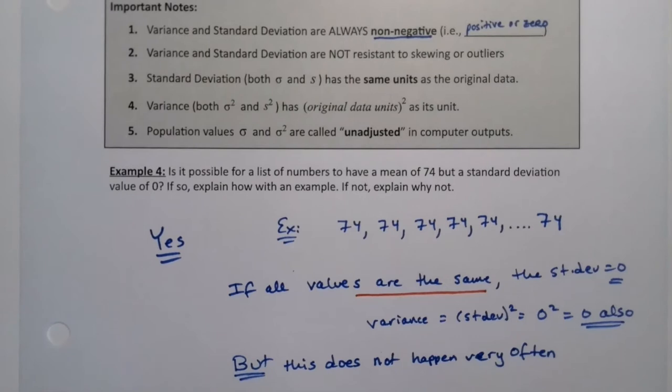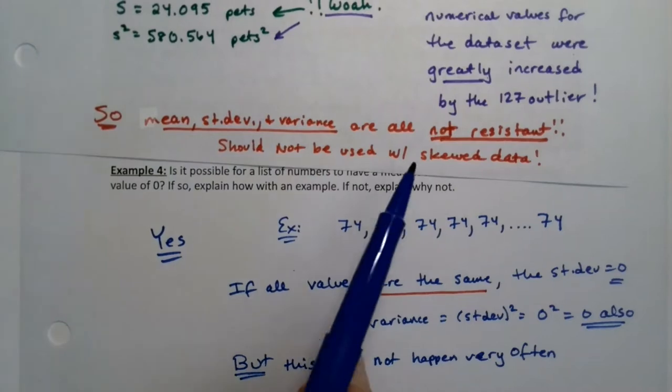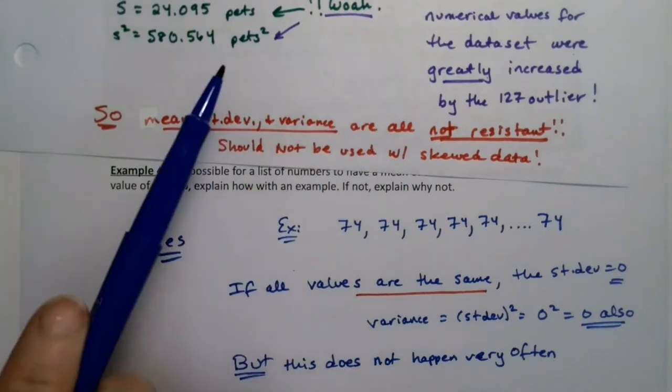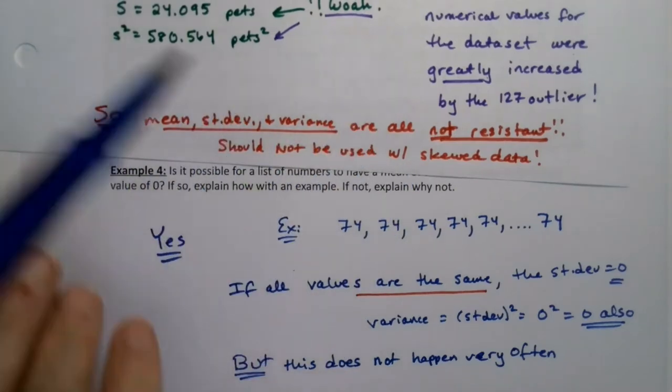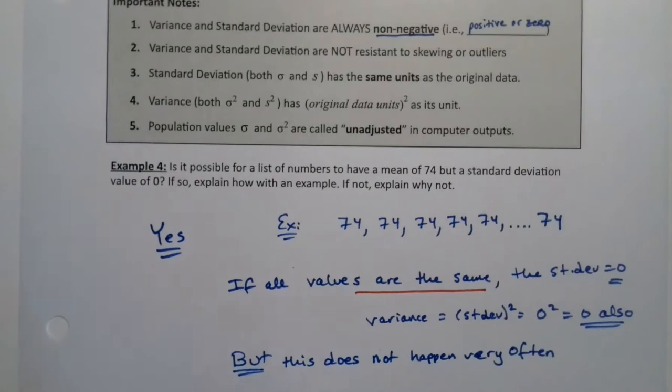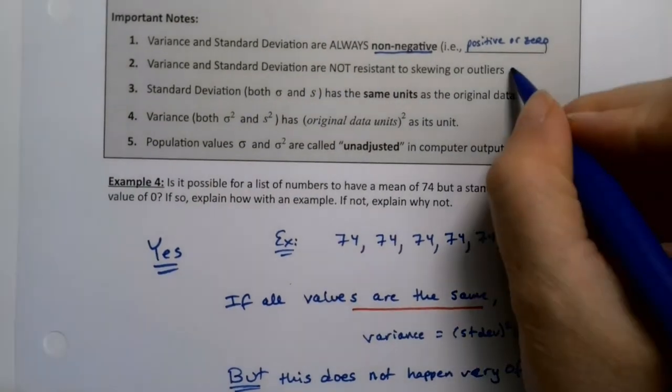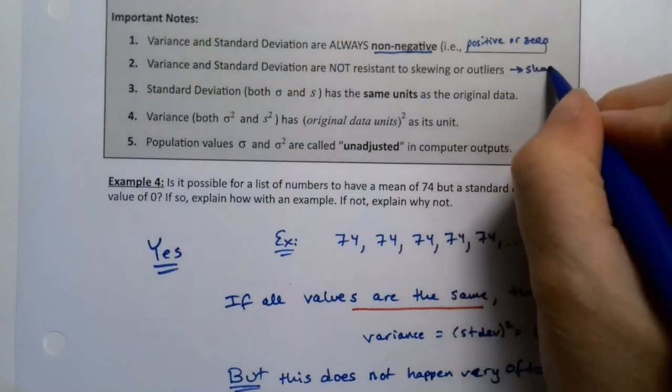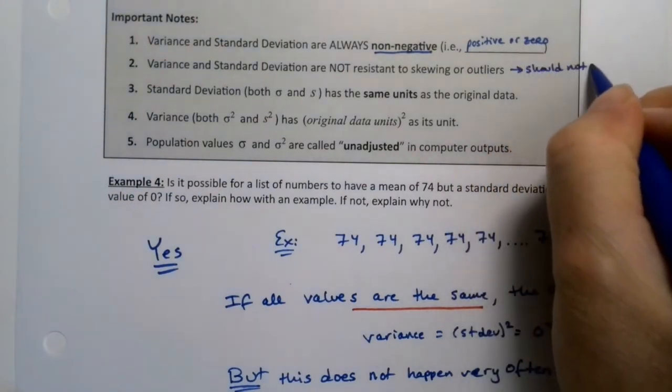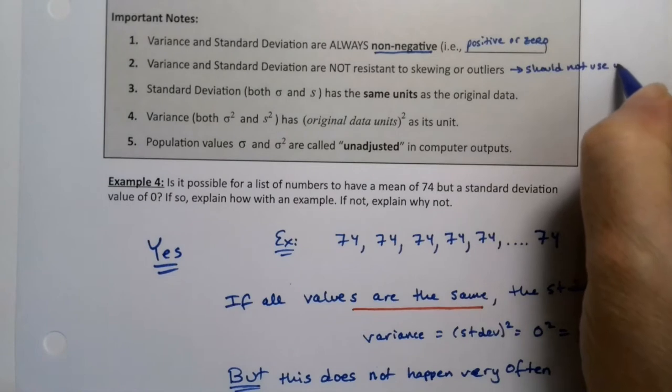Now, we just saw in the previous example what we wrote at the very end, which is that the variance and the standard deviation are not resistant. They get affected by having outliers, right? So they are not resistant. That's what this part is saying. And that means that they should not be used for skewed data. We'll talk more about that in section 3-4.